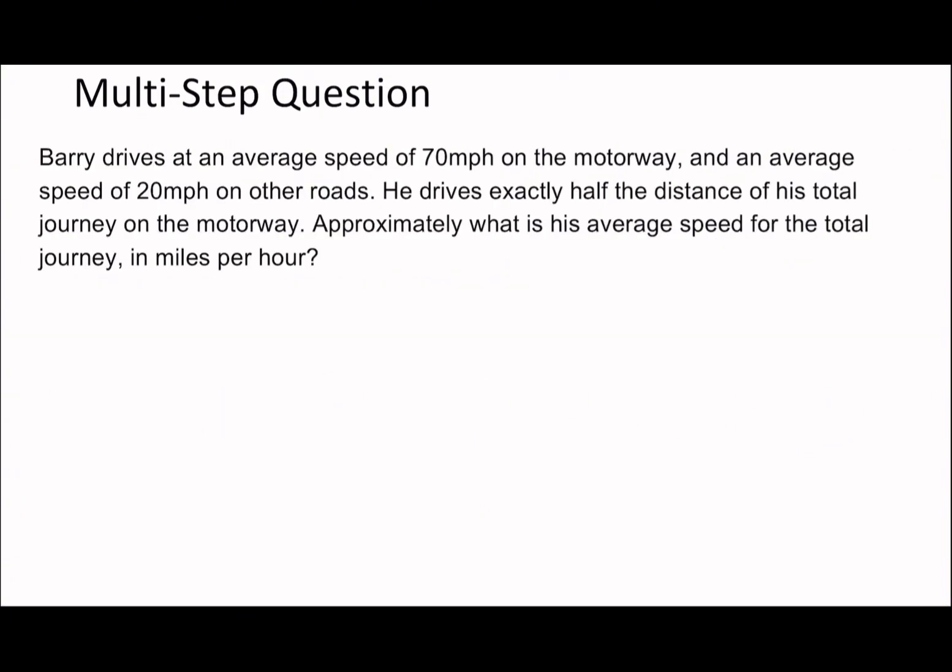Okay, so on to the next question. Barry drives at an average speed of 70 miles per hour on the motorway and an average speed of 20 miles per hour on other roads. He drives exactly half the distance of his total journey on the motorway. Approximately what is his average speed for the total journey in miles per hour? This is quite a devious question. It's devious because you kind of have to work with unknown values here. Unfortunately, that's the kind of difficulty behind this, and therefore it is quite a challenging question.